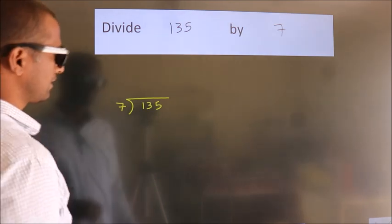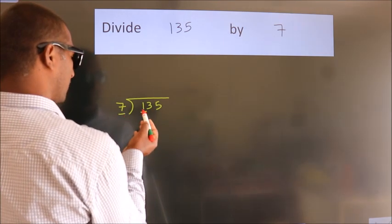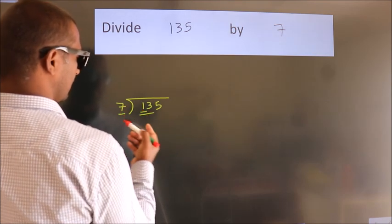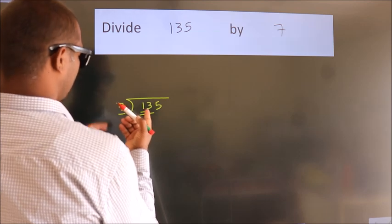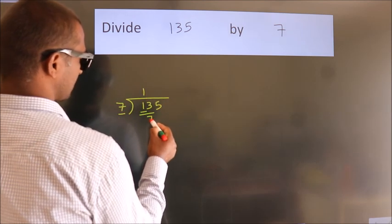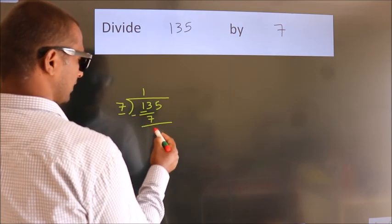Next, here we have 1, here 7. 1 is smaller than 7, so we should take two numbers, 13. A number close to 13 in the 7 table is 7 times 1 is 7. Now we should subtract. We get 6.